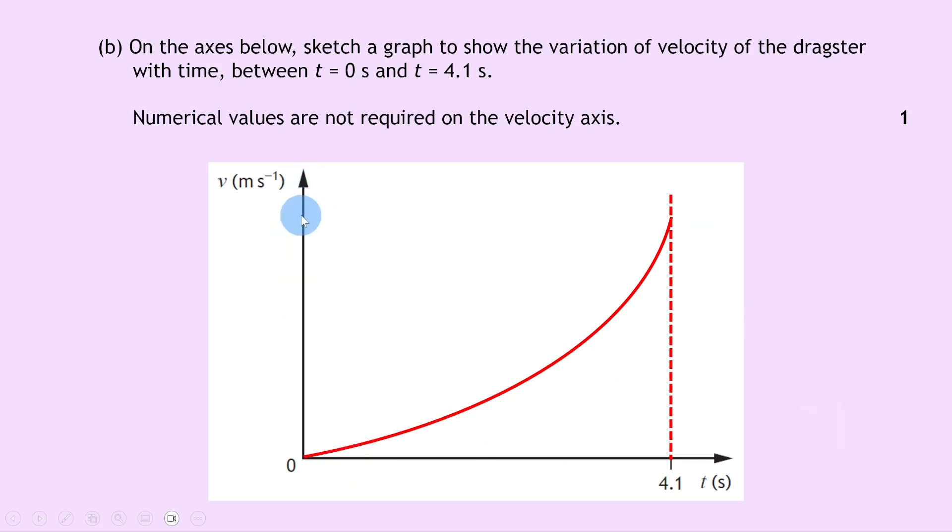If we look at the y-axis here, notice how as the curve slopes upwards, we're getting a bigger change in velocity in a given time, and that suggests an increasing acceleration. So for that one mark, you really just want to be showing a curve sloping up the way and you want to stop your curve at 4.1 seconds.